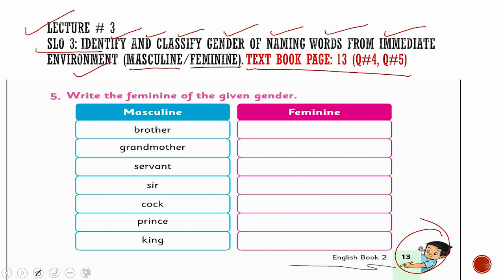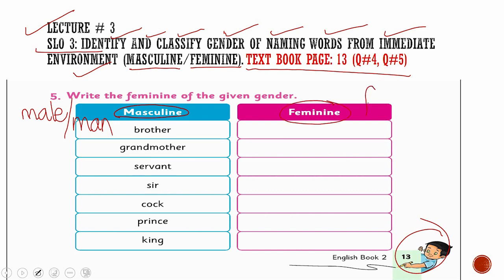Please remember: the word masculine is given to names which describe male — male or man. Feminine is the word which shows female or lady.